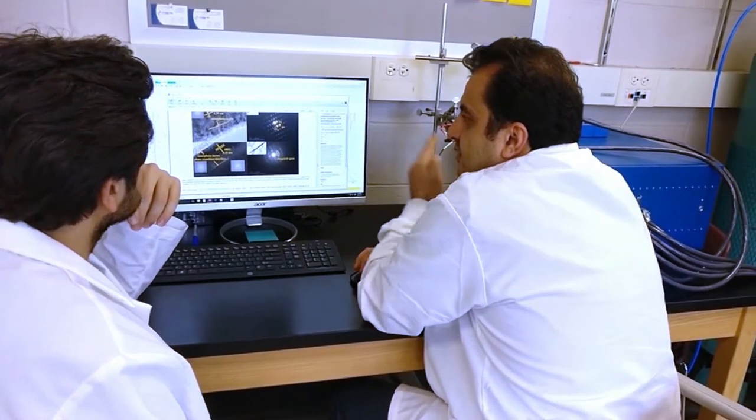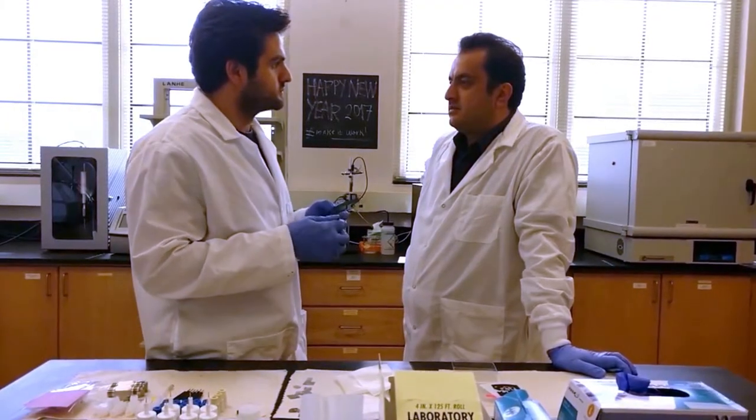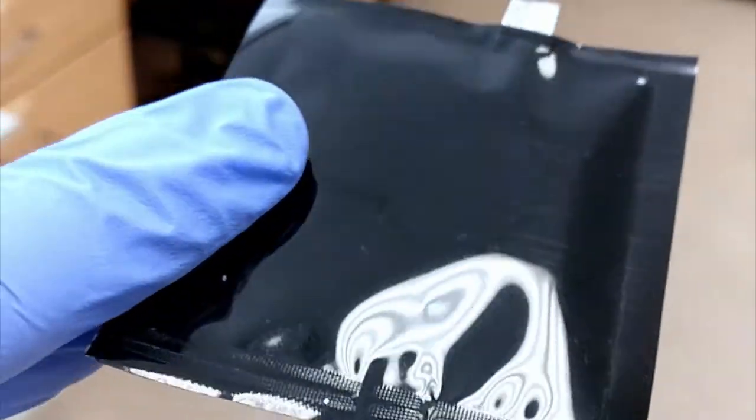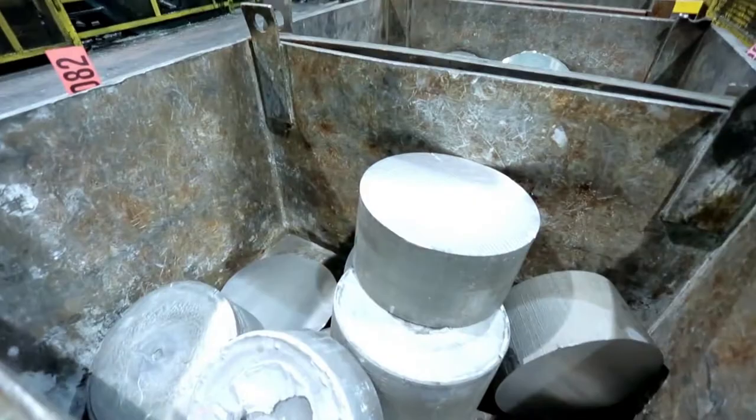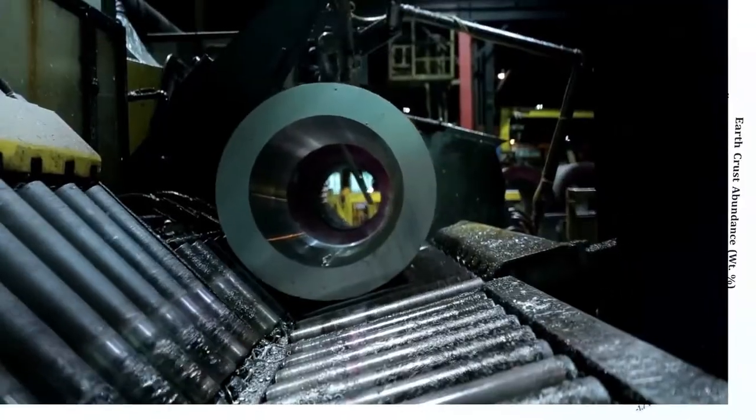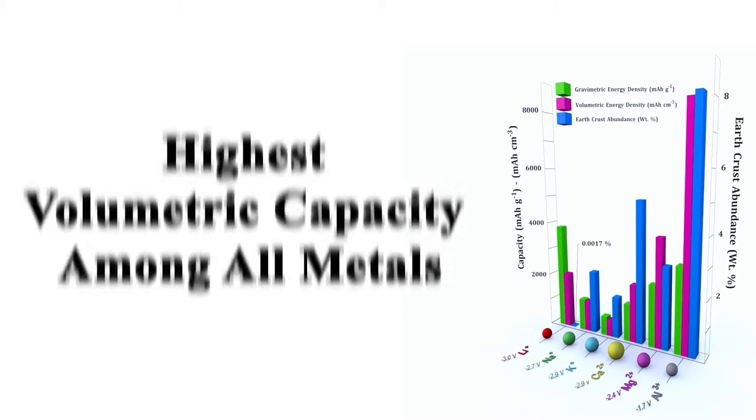Recently, our group at Auburn University has successfully developed a rechargeable aluminum battery with a non-flammable, room temperature ionic liquid electrolyte. Aluminum is the most abundant metal in Earth's crust, can be handled in the open air, and has the highest theoretical volumetric capacity of 8040 mAh per cubic centimeter.